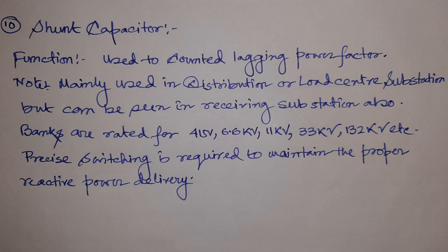Precise switching is needed because the number of motors operating may vary — five, eight, or ten at a time. The capacitor bank must be able to reduce its capacitance so it does not overcompensate or raise the busbar voltage when fewer motors are operating. These are the five additional substation equipment discussed in this video. In the next video, other equipment will be covered. Please like, share, comment, subscribe, and hit the bell icon for notifications.